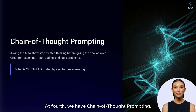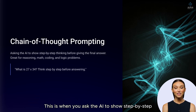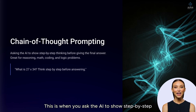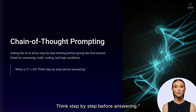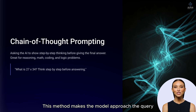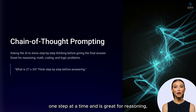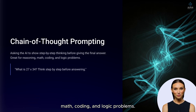At fourth, we have chain-of-thought prompting. This is when you ask the AI to show step-by-step thinking before giving the final answer. For example: 'What is 27 into 34? Think step-by-step before answering.' This method makes the model approach the query one step at a time, and is great for reasoning, math, coding, and logic problems.